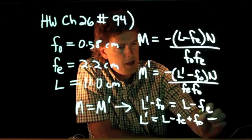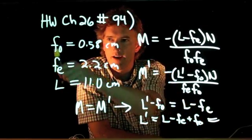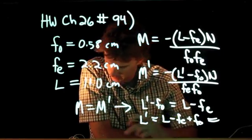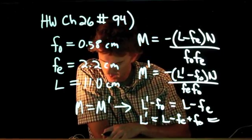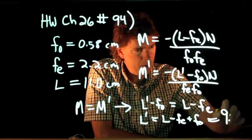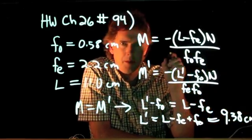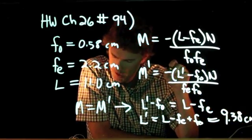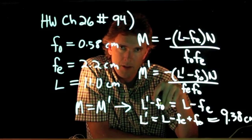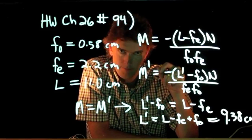Putting FO on the other side, we have L prime equals L minus FE plus FO. And now we have all those numbers — there's our L, there's our FE, there's our FO. If you plug in those numbers, you should get 9.38 centimeters. Try that with your numbers, and if you have any issues, come see me in my office. Good luck.